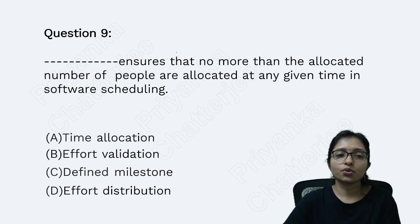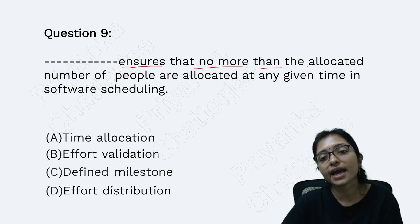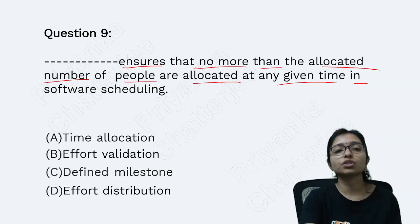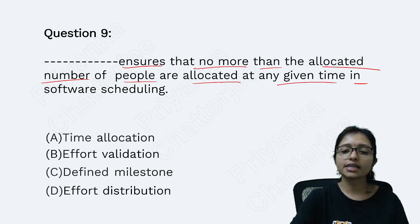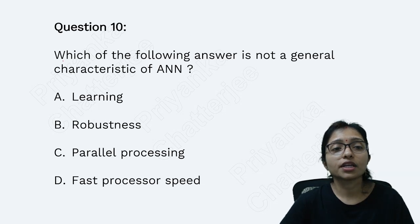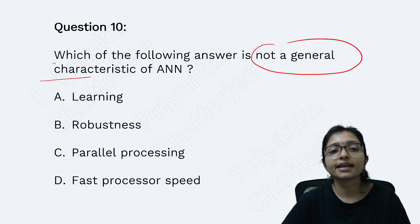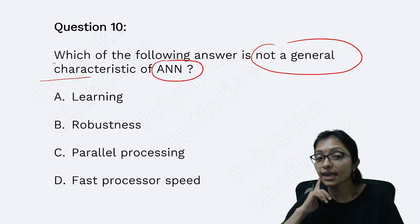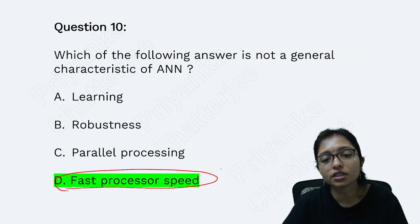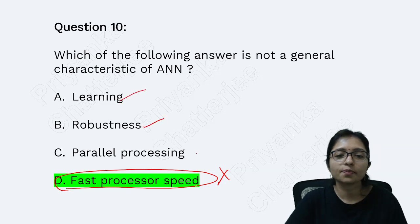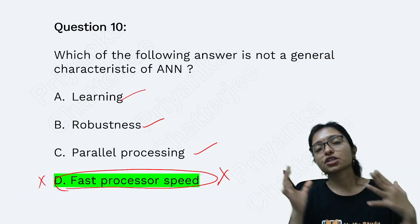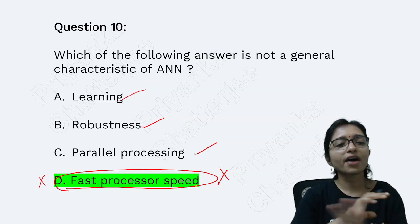This question asks what ensures that no more than the allocated number of people are scheduled for a given software task — the answer is effort validation. Next question: which of the following is NOT a general characteristic of artificial neural networks? Fast processor is not the focus. Learning, robustness, and parallel processing are the focus. The goal of ANN is that the machine works like a human brain, not to maximize processor speed.